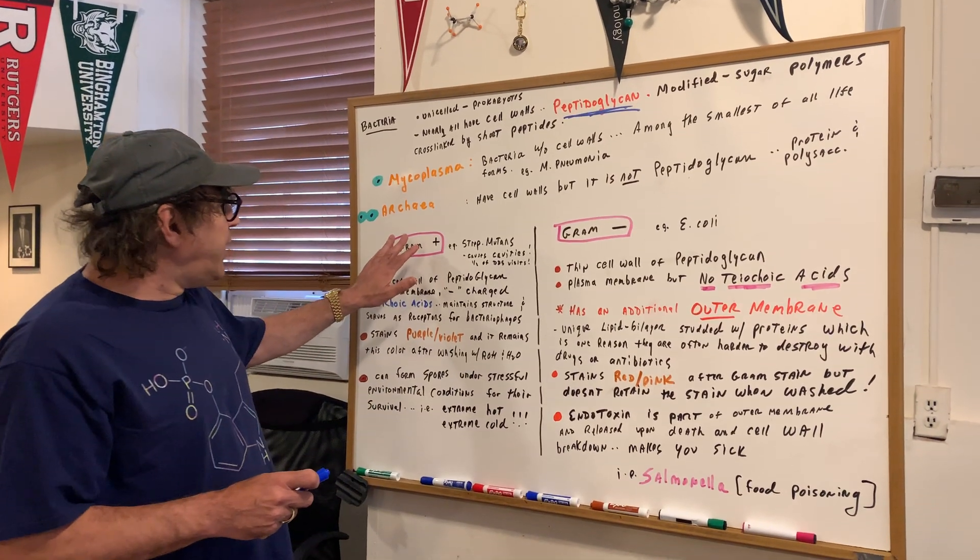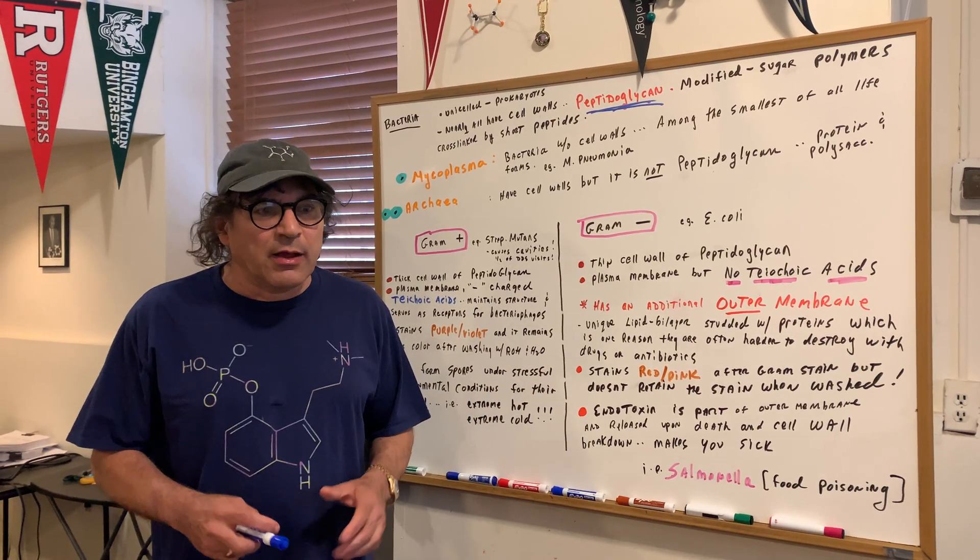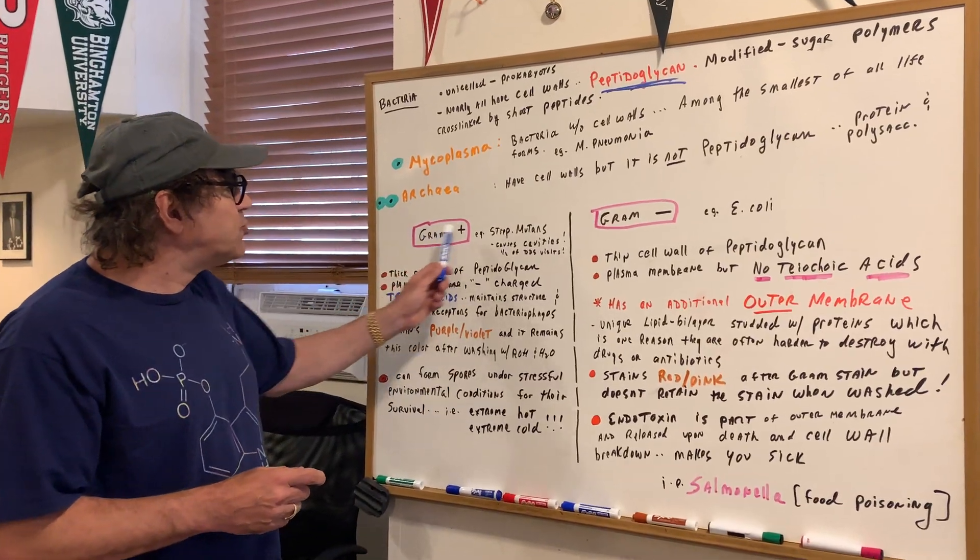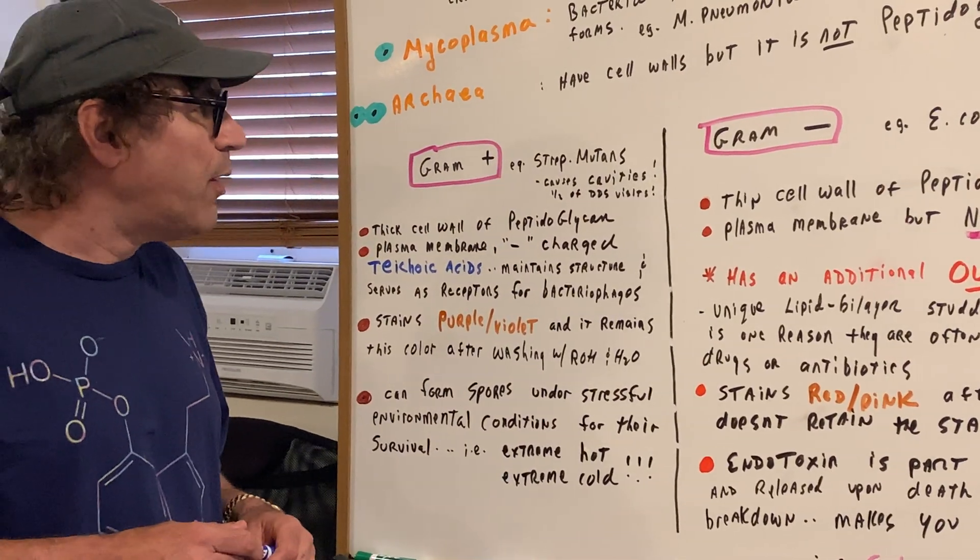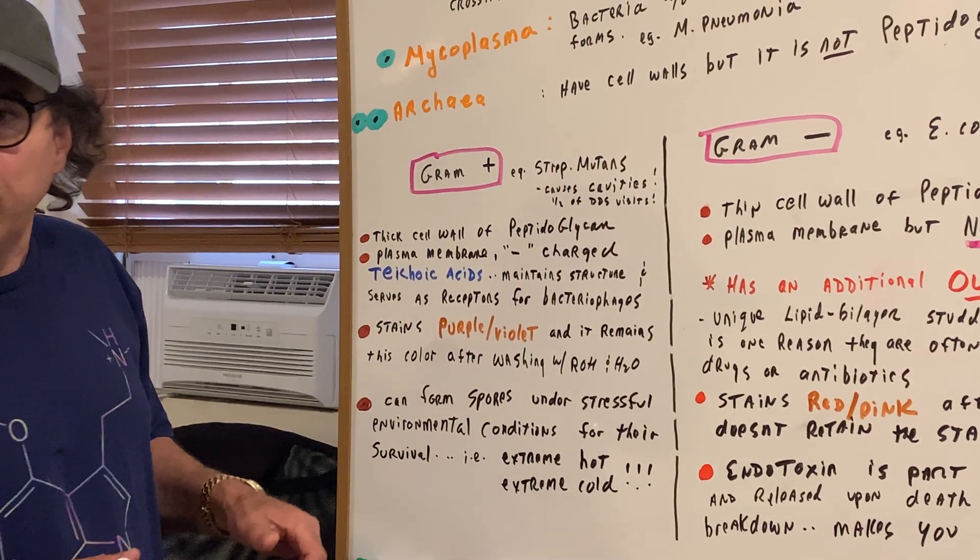Now, we can have a discussion for hours, days on this, but let me just give you the essentials for what I think you need on bacteria. There's gram-positive and gram-negative bacteria. The gram-positive, an example would be strep mutans.